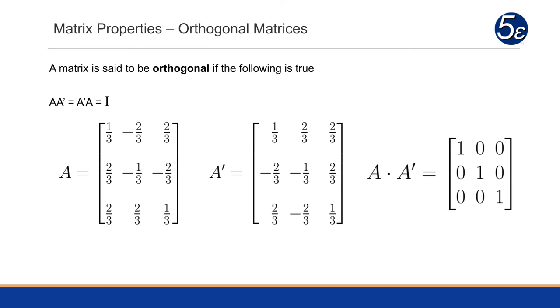Now, a matrix is said to be orthogonal if the following is true: A times A transpose equals A transpose times A, and gives us the identity matrix. So if we multiply these two matrices together, we will end up with an identity matrix.